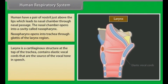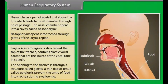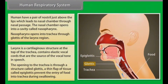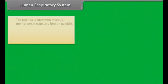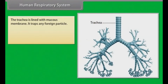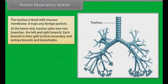At the top of the trachea are elastic vocal cords that are the source of vocal tone in speech. The opening to the trachea is through a structure called the glottis. A thin flap of tissue called the epiglottis prevents the entry of food into the trachea during swallowing. The trachea is lined with mucous membrane, which traps any foreign particles. At the lower end, the trachea splits into two branches — the left and right bronchi.